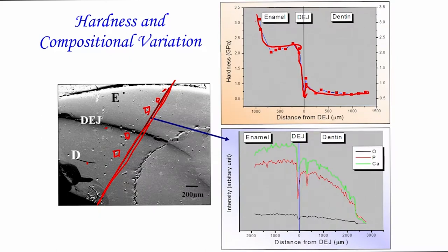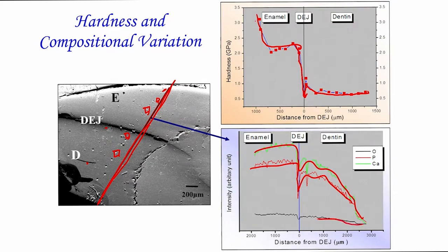Another important thing is careful EDS — energy dispersive spectroscopy — analysis done together with the scanning electron microscope. What you see is that calcium content is reduced as you go from enamel to dentine, and the same trend holds for phosphorus, while oxygen content does not change significantly. This confirms that hydroxyapatite content reduces from 95% in enamel to 70% in dentine, as reconfirmed by this EDS-based compositional analysis.